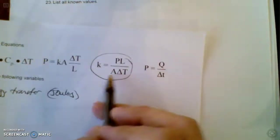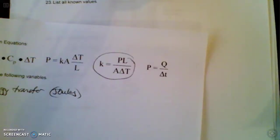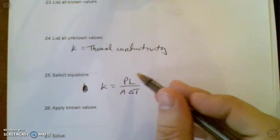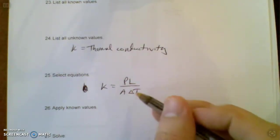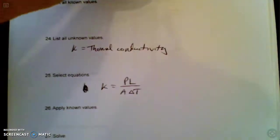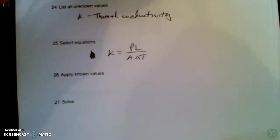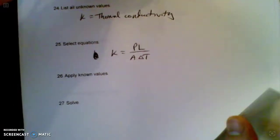But yeah, we pretty much know all those pieces from reading the word problem. And that'll give you a chance to get used to figuring out what P means, what L means, what A means, what delta capital T means. And then you're just going to solve for K. It's kind of nice that it's already solved for that. A lot less algebra work than the previous time.